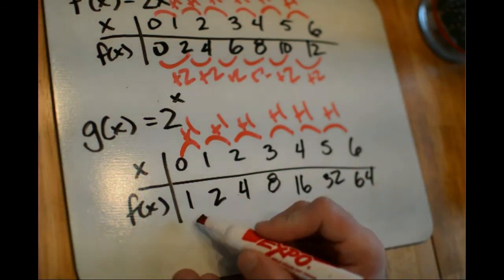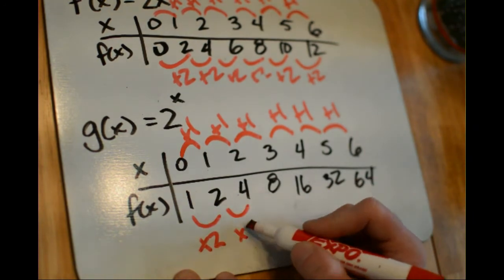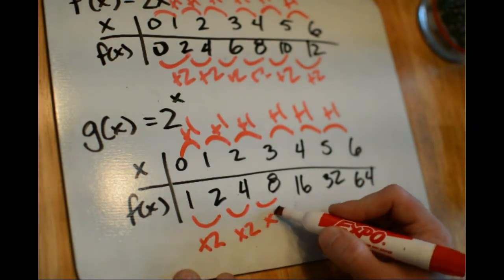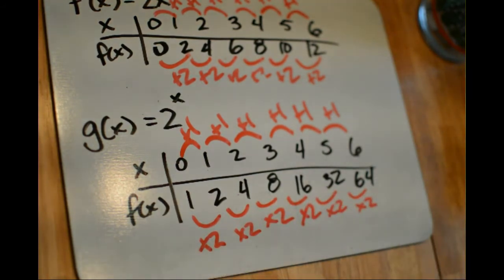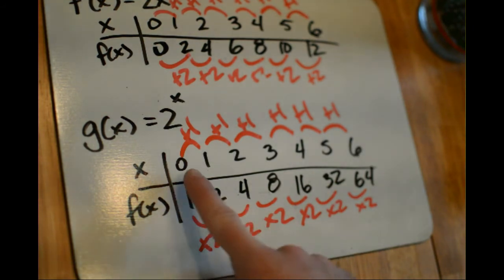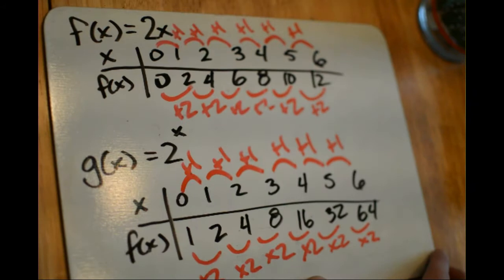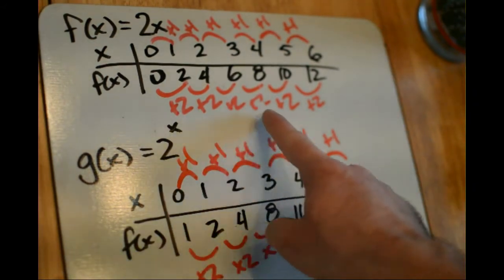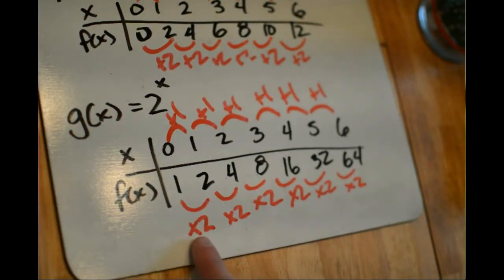We have something else that's kind of constant. To get from 1 to 2, we multiply by 2. From 2 to 4, multiply by 2. From 4 to 8, multiply by 2. From 8 to 16 — everywhere along here we are multiplying by 2. That's really the sign of exponential growth: as x increases by a constant value, f of x is being multiplied by a constant value. Linear growth shows a constant rate of change — adding the same amount each time — while exponential growth shows multiplying by the same amount each time.